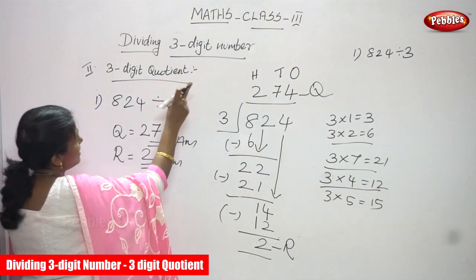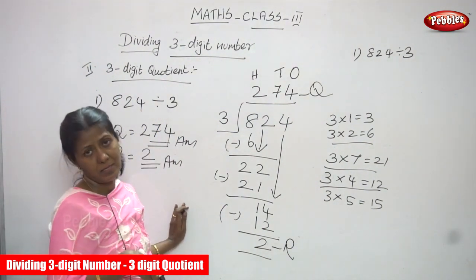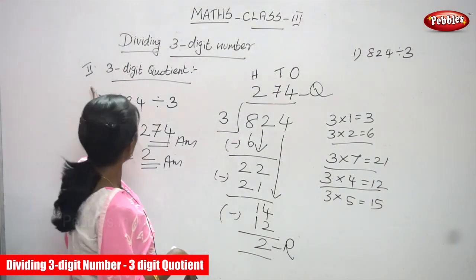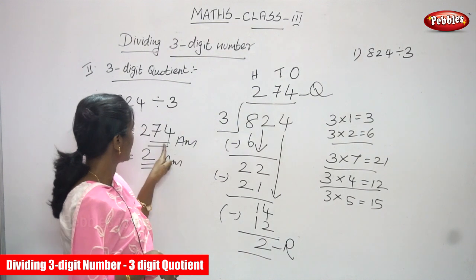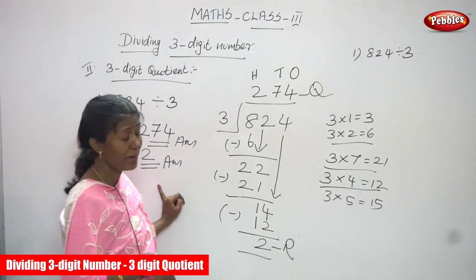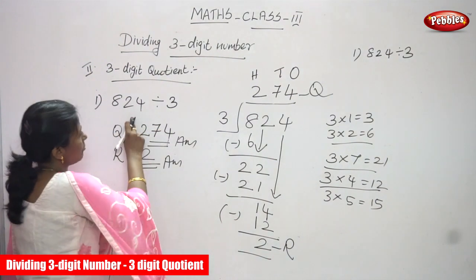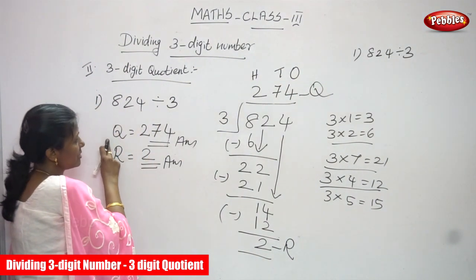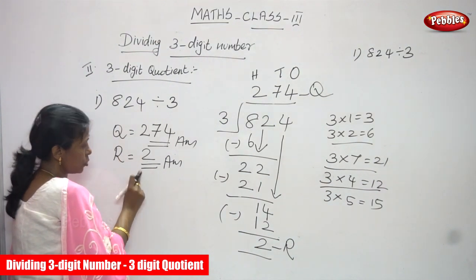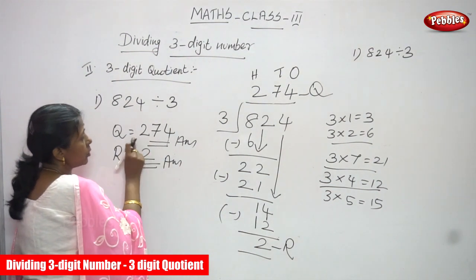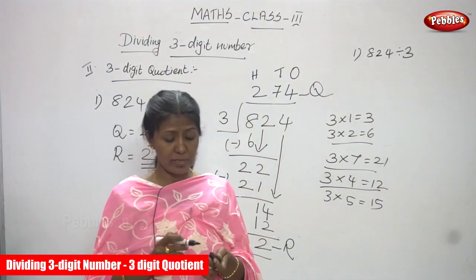So dividing a 3-digit number, you will get a 3-digit quotient as the answer. Quotient is a 3-digit number and the remainder is a single-digit number. For this question 824 divided by 3, quotient is 274 and remainder is 2. Consider the quotient as a 3-digit number — don't forget it. I think you understand this clearly.